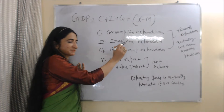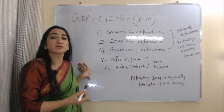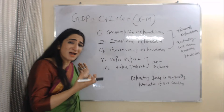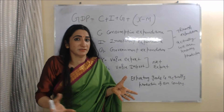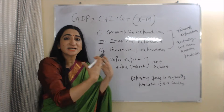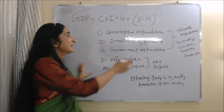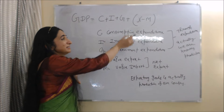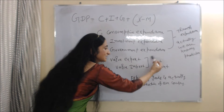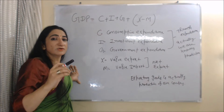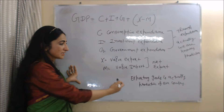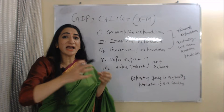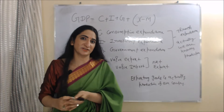G is government expenditure. The government also spends on goods and services for the welfare of society. Through expenditure we are knowing our country's production — these goods are available and that's why people are buying them. X is the value of exports and M is the value of imports. When we subtract M from X, we get net exports. We include net exports in our GDP because exporting goods is actually production of our country. In GDP we include everything which is produced within our country.